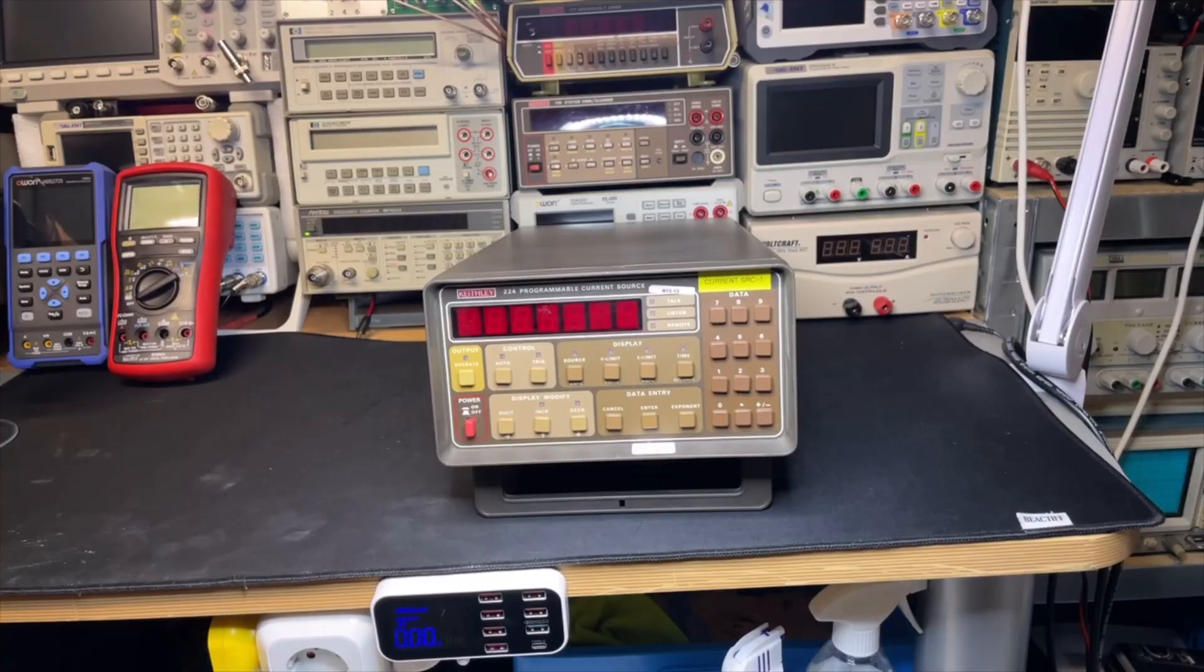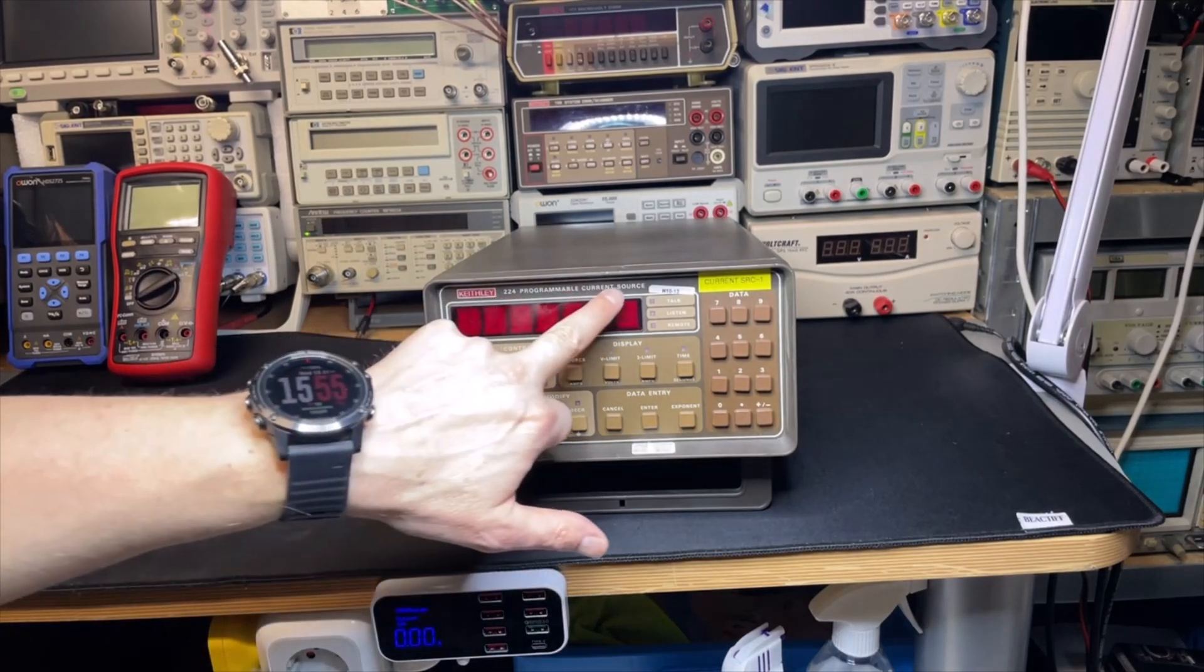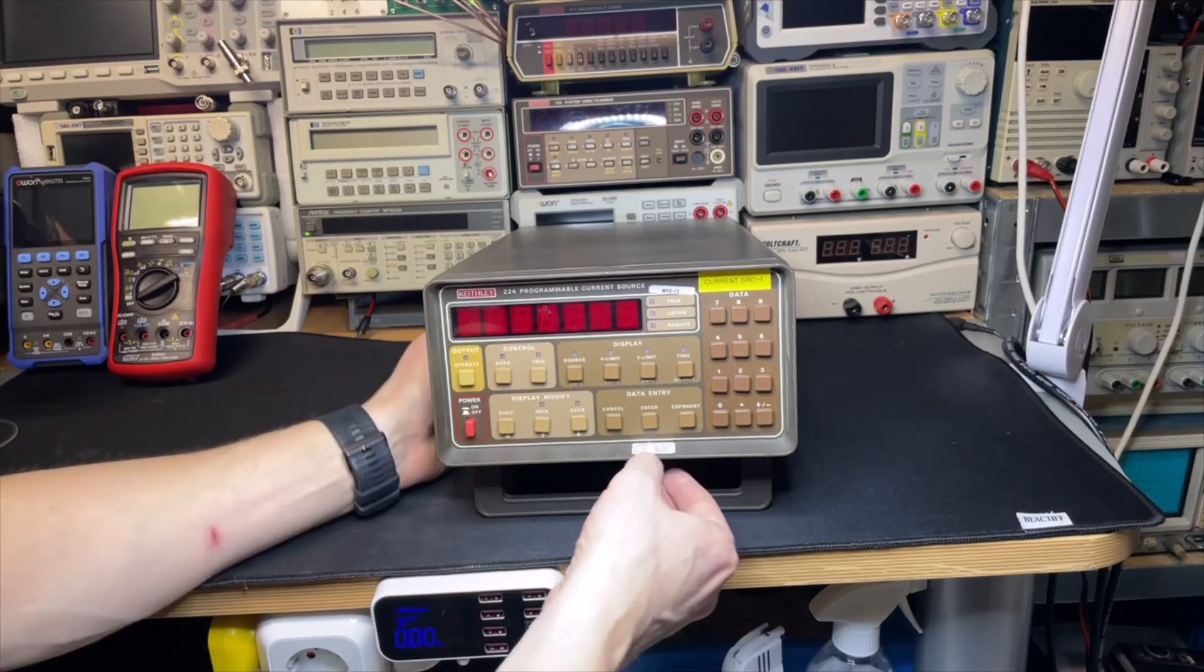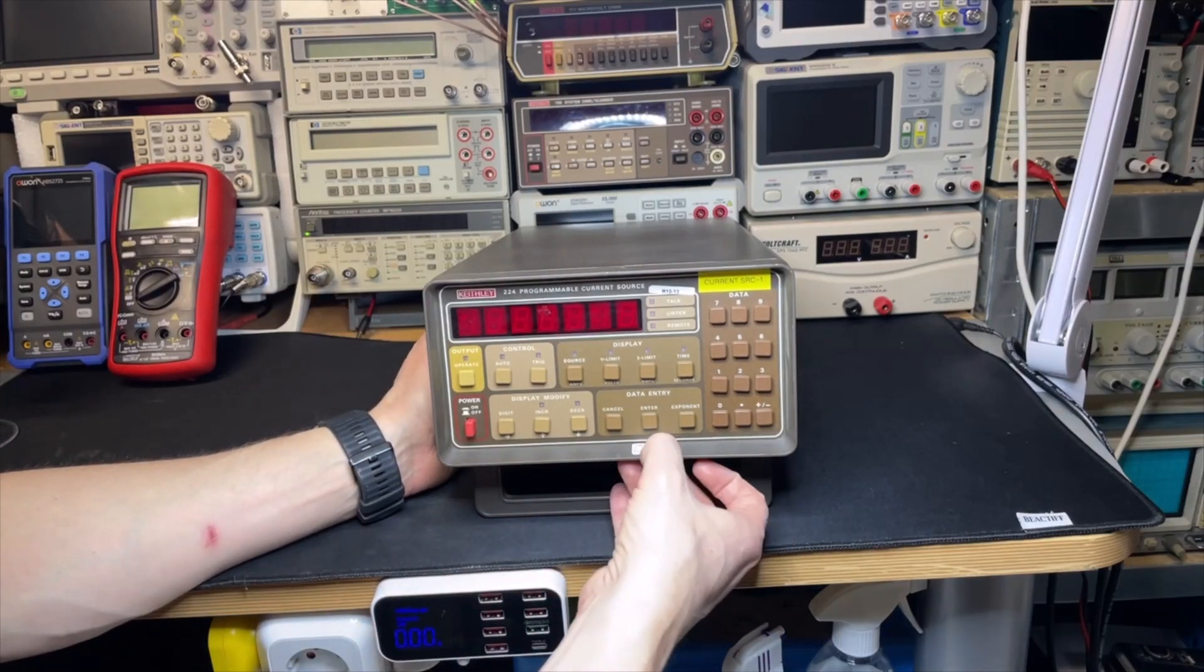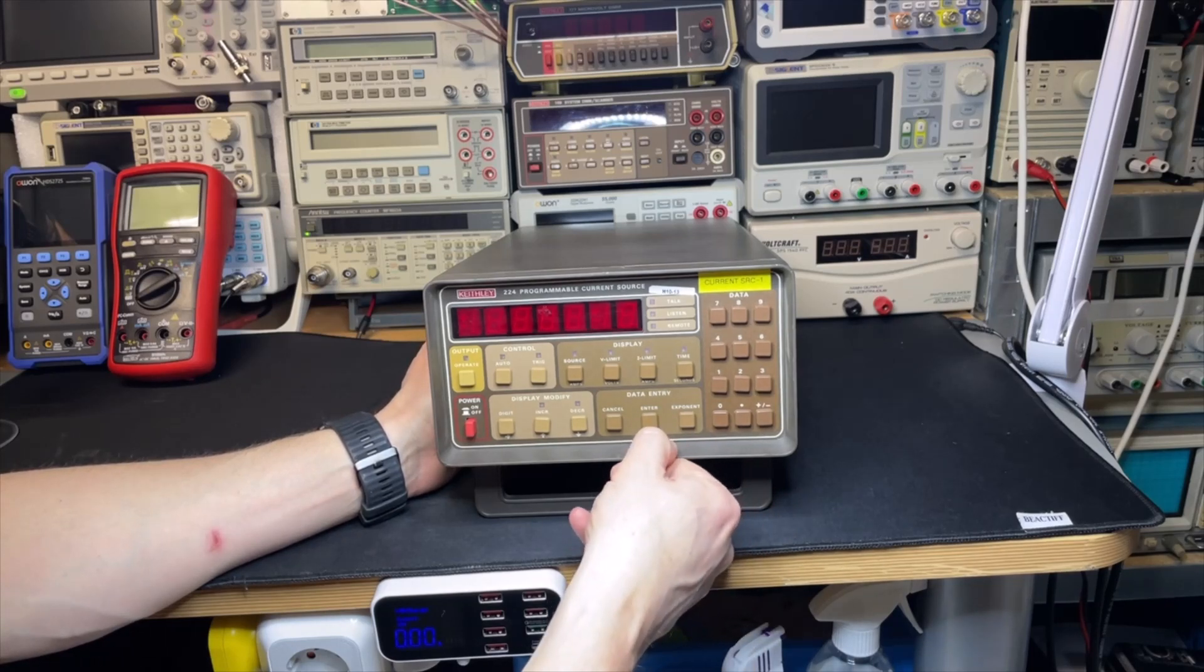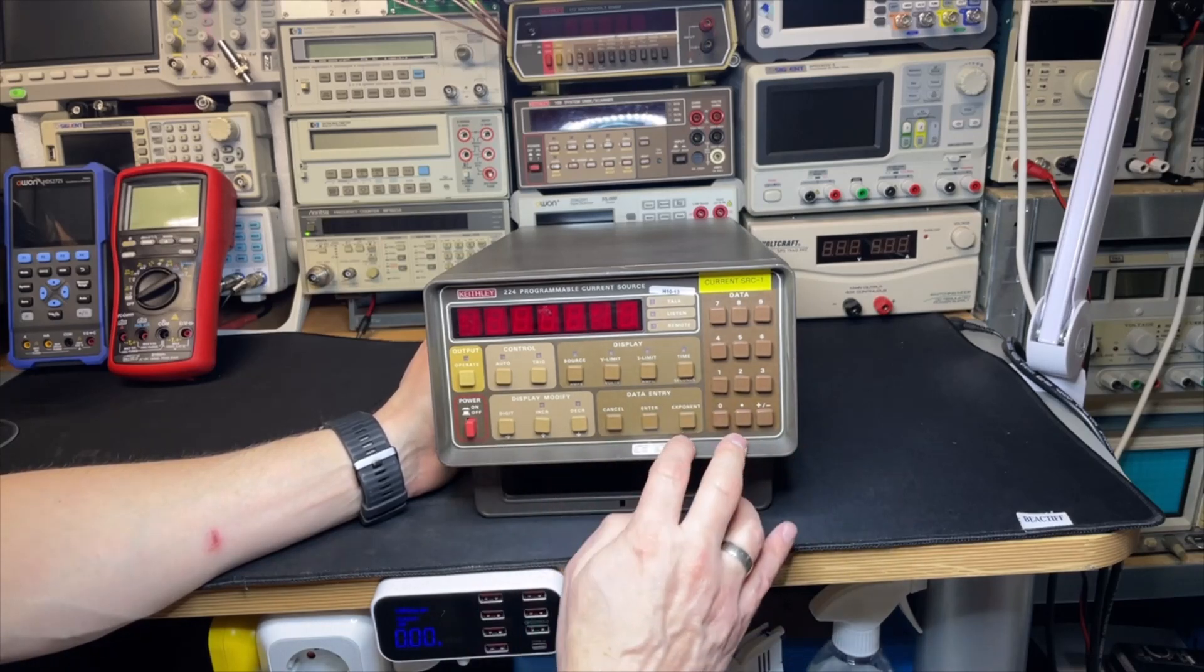The Keithley 224 programmable current source. There are still some stickers, even the calibration sticker right here. It was calibrated in 2010 and the calibration expires 2012.